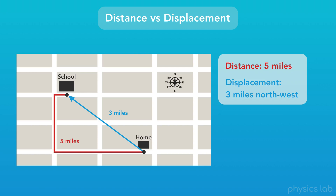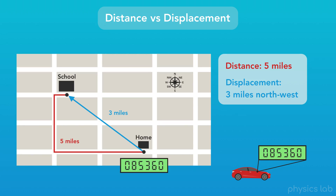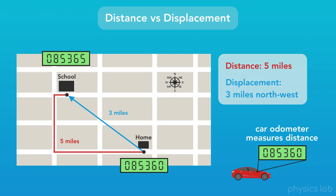Here's a question for you. Every car has something called an odometer, which measures the number of miles driven in your car. If we checked the odometer at home and then checked it again when we got to school, would the odometer increase by 5 miles or by 3 miles? Does the odometer track our distance or our displacement? The odometer would go up by 5 miles, because it measures distance — it measures the actual path that the car takes.